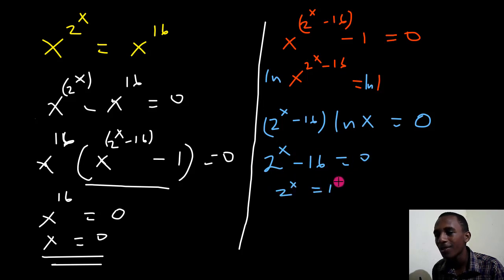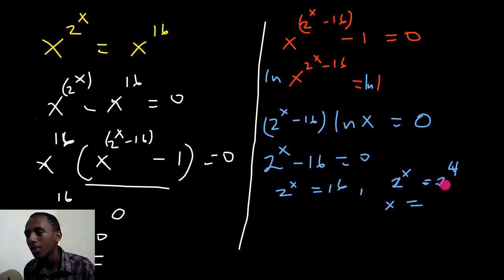2 to the power x equals 16, right? So 2 to the power x equals 2 to the power 4, if you like. So x equals 4.